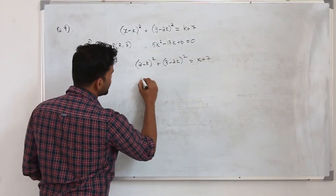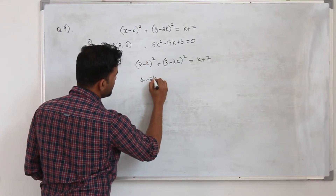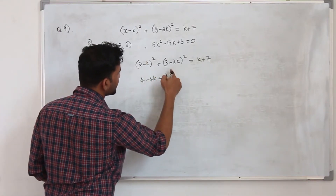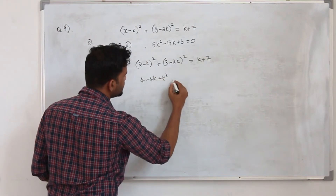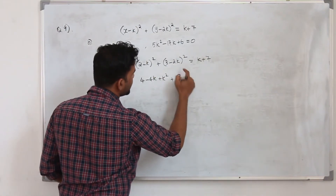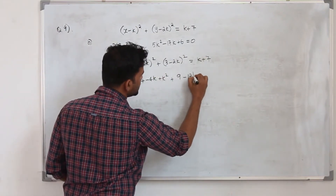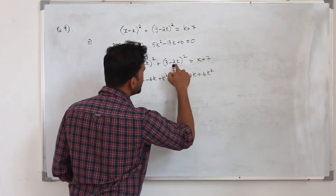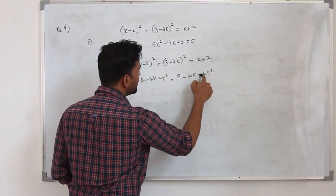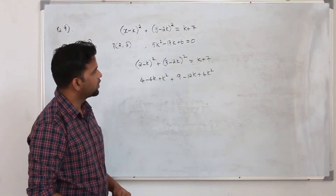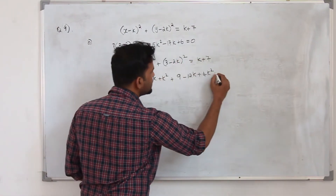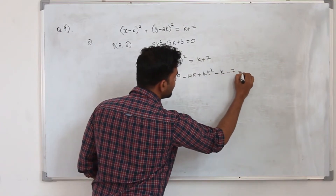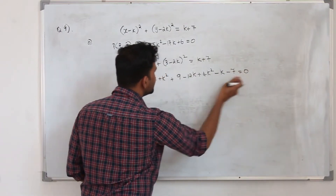Using a minus b whole square equals a squared minus 2ab plus b squared, expand: 2 minus k whole square gives 4 minus 4k plus k squared, and 3 minus 2k whole square gives 9 minus 12k plus 4k squared. Bring the k plus 7 to the left, so it becomes minus k minus 7.